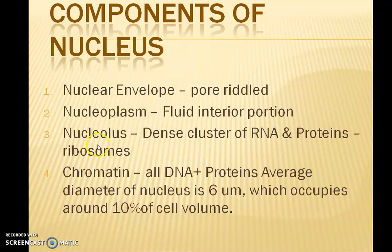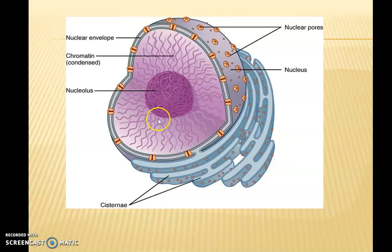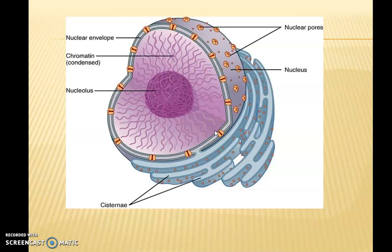Nuclear envelope, nucleoplasm, nucleolus, and the chromatin. This is the ultrastructure of a nucleus. This is the nuclear envelope and the membrane is a double layer. Inside this we have a gel-like fluid or matrix inside the nucleus that is called the nucleoplasm. Inside the nucleoplasm we have a thick and granular region which is called the nucleolus, and thin thread-like substances — these are the chromatin. So these are the components the nucleus has.